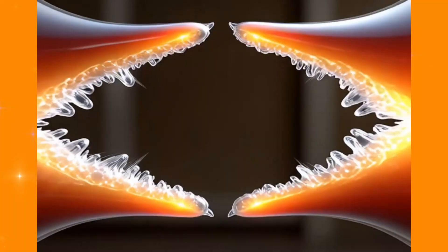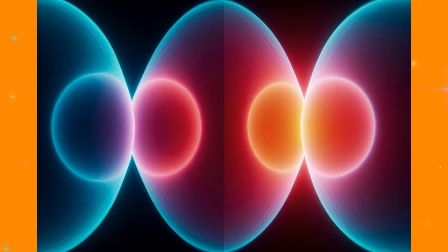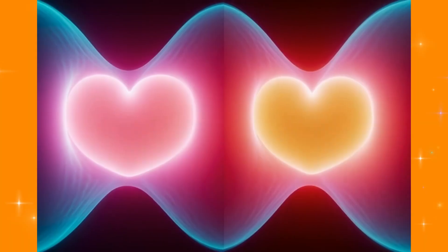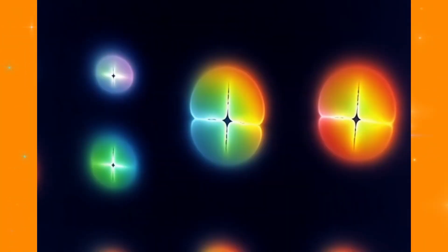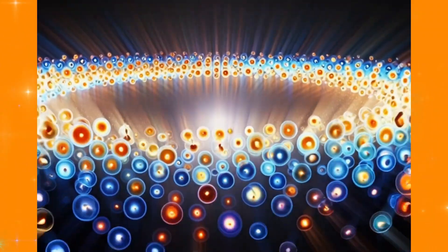One cell becomes two, two becomes four, four becomes eight. This is how you went from a single fertilized egg to the hundred trillion cells you are today. This is life copying itself perfectly, endlessly right under the microscope.